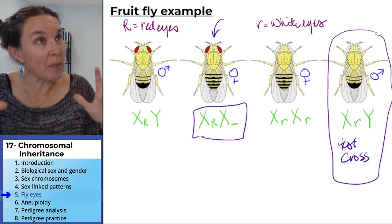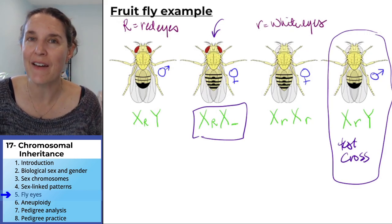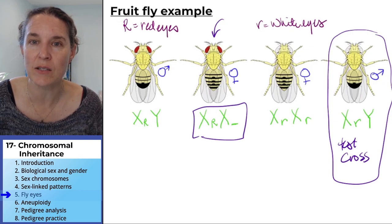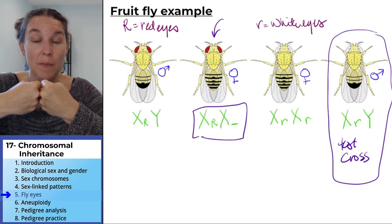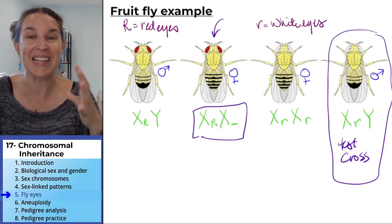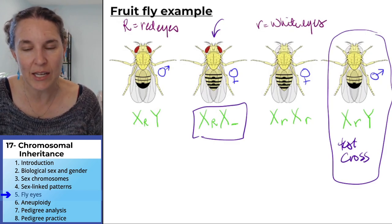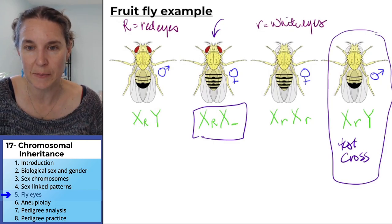Inheritance patterns based on sex chromosomes—we also have interesting inheritance patterns based on chromosomes not separating properly during gamete formation and ending up with odd numbers of chromosomes. So that is called aneuploidy, and let's talk about that next.